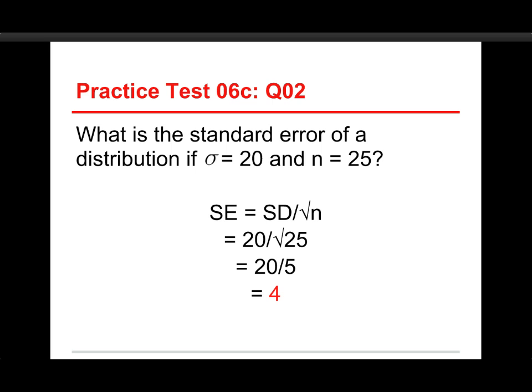Let's see how this works. This is one where we only need the first part of the equation that we've been using. We need the standard error, SE, is equal to the standard deviation divided by the square root of the sample size. The standard deviation, that sigma, is 20, divided by the square root of the sample size of 25. So 20 divided by 5 is equal to 4, and that's the standard error.